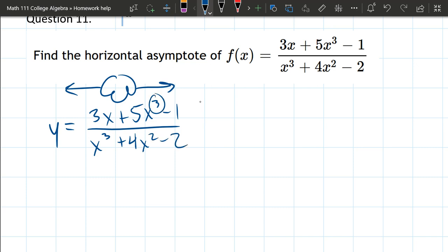This x cubed really should be at the front. So let's go ahead and fix that. So we got 5x cubed plus 3x minus 1, writing in decreasing order, x cubed plus 4x squared minus 2.